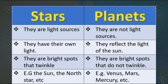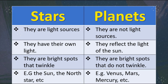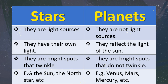Here are the differences between stars and planets. Stars are light sources; on the other hand, planets are not light sources. Stars have their own light, and planets only reflect light from the sun. Third, stars are bright spots that twinkle, and planets do not twinkle. Examples of stars include the sun, the North Star, and others. Examples of planets include Venus, Mars, Mercury, Earth, Neptune, Uranus, and more.